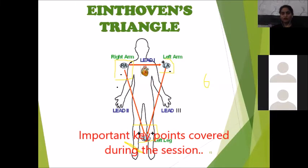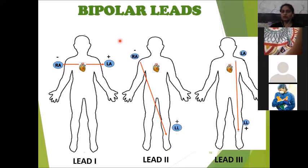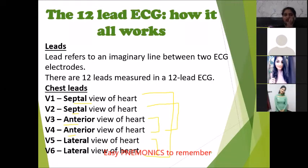Coming back to the Einthoven's triangle, we can see the bold lines representing Lead 1, Lead 2, and Lead 3. A common exam question is: which is the confirmatory test to determine the exact location of damage to the heart? The answer is electrocardiography. The four cardiac regions are inferior, lateral, anterior, and septal.